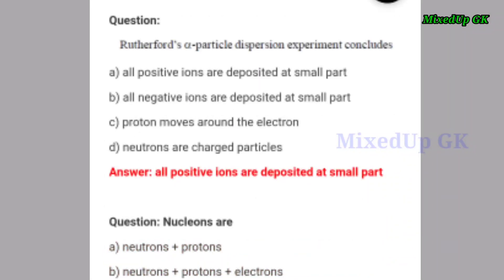Next question: Rutherford's alpha particle dispersion experiment concludes — option A: all positive ions are deposited at a small part. Option B: all negative ions are deposited at a small part. Option C: protons move around the electron. Option D: neutrons are source particles. The correct answer is option A — all positive ions are deposited at a small part.